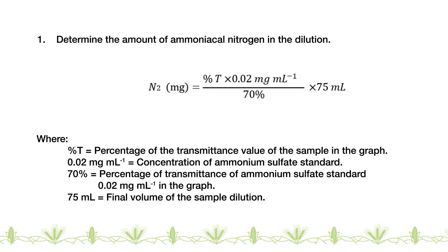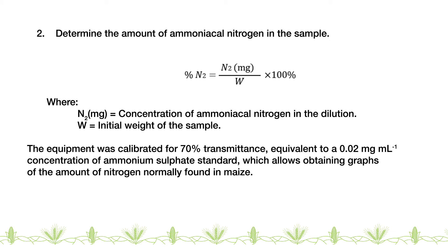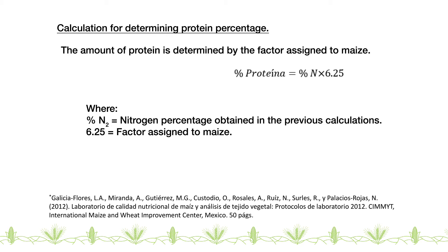Calculations: Determine the amount of nitrogen in the dilution. Then determine the amount of nitrogen in the sample and estimate the protein percentage using the factor assigned to maize. For maize, use a factor of 6.25 to estimate the protein content relative to the amount of ammoniacal nitrogen.